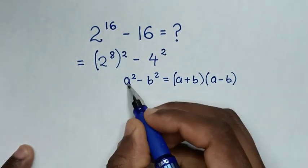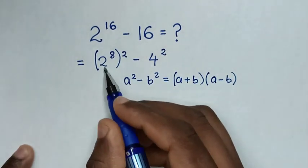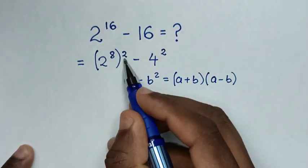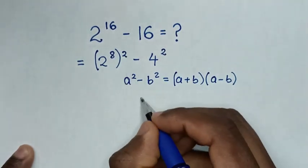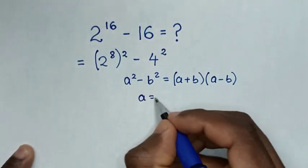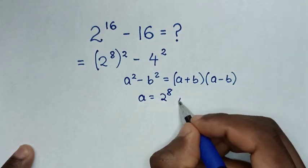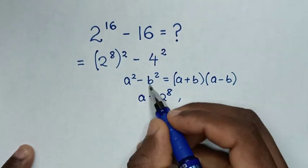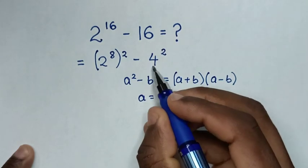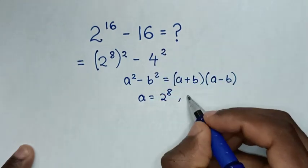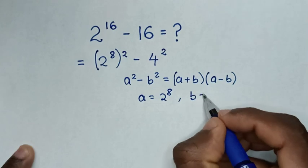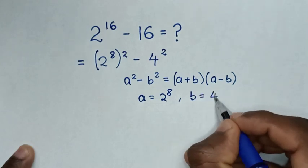So when we compare a squared with (2^8) squared, then a is equal to 2^8. And when we compare b squared with 4 squared, then b is equal to 4.